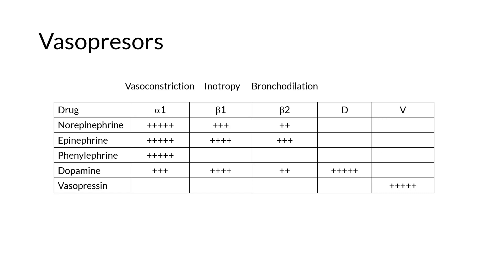Vasopressors have uses in other shock states as well. The key target is the alpha-1 adrenergic receptor, and selection of vasopressors sometimes depends on the effects at other receptors. The alpha-1 receptor causes vasoconstriction. You're almost never wrong starting with norepinephrine — it is a strong alpha-1 agonist with modest activity at beta-1 and beta-2. Because of the beta-1 effect, it may augment cardiac output enough to offset the increased afterload from alpha-1 activity. It is considered first-line in septic shock and may be the best for cardiogenic shock as well. There is no shock state in which it is contraindicated.